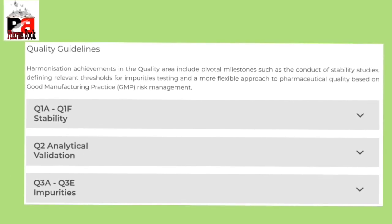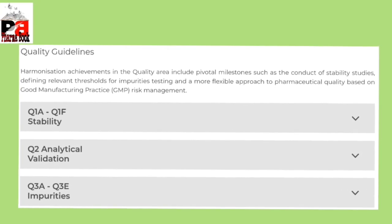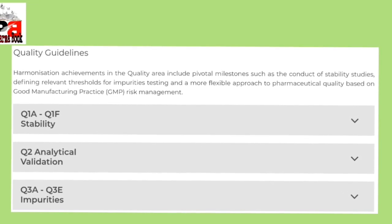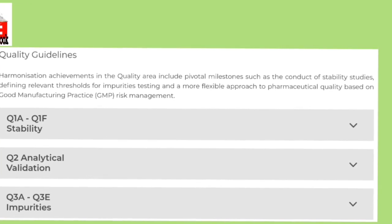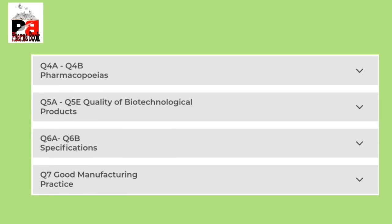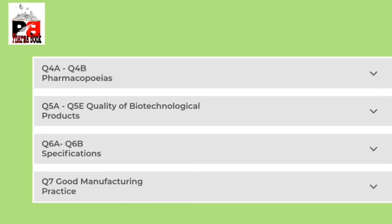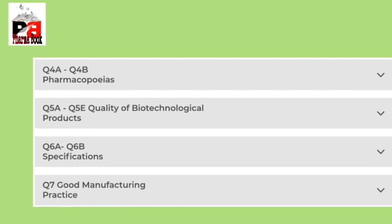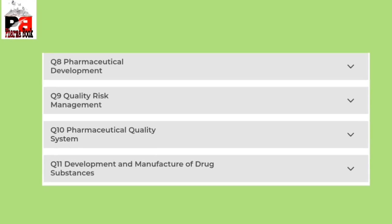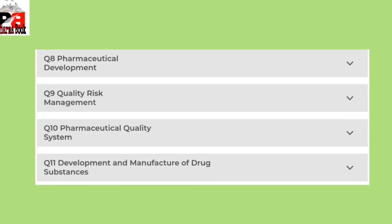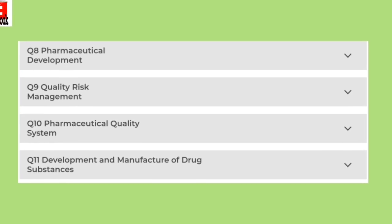The 14 quality guidelines are: Q1 Stability, Q2 Analytical Validation, Q3 Impurities, Q4 Pharmacopoeia, Q5 Quality of Biological Products, Q6 Specification, Q7 Good Manufacturing Practices, Q8 Pharmaceutical Development, Q9 Quality Risk Management, Q10 Pharmaceutical Quality System.